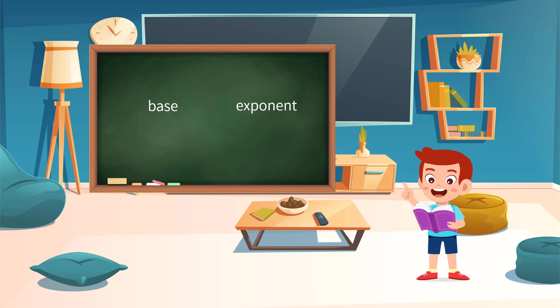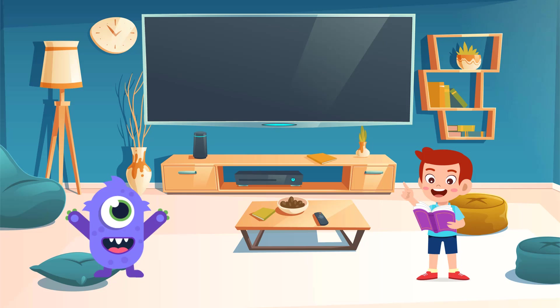In the power of ten, the ten is the base. On the upside to the right of ten, the number is the exponent. The relationship between the base and the exponent is just like Lumos and his crown.